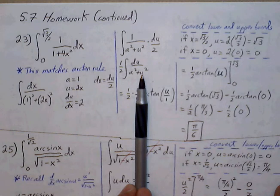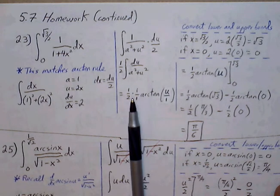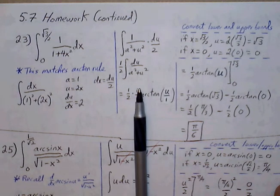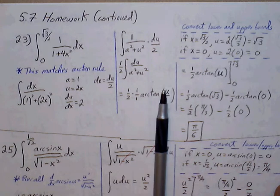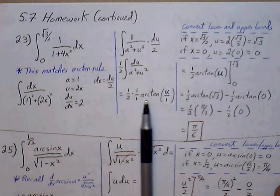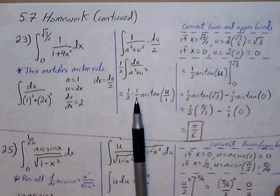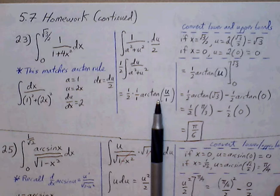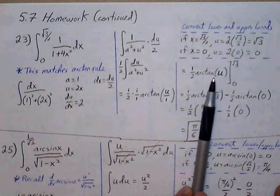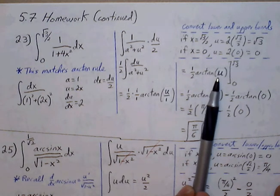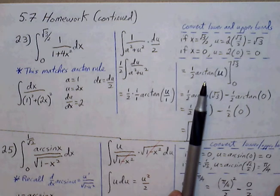Now this matches up nicely with our integral rule for arctangent, so we have 1/2 times 1/a times arctangent of u/a. I'm going to go ahead and replace the a value with 1. I'm going to hold on to the u value because we're going to plug in the upper and lower bounds using u.